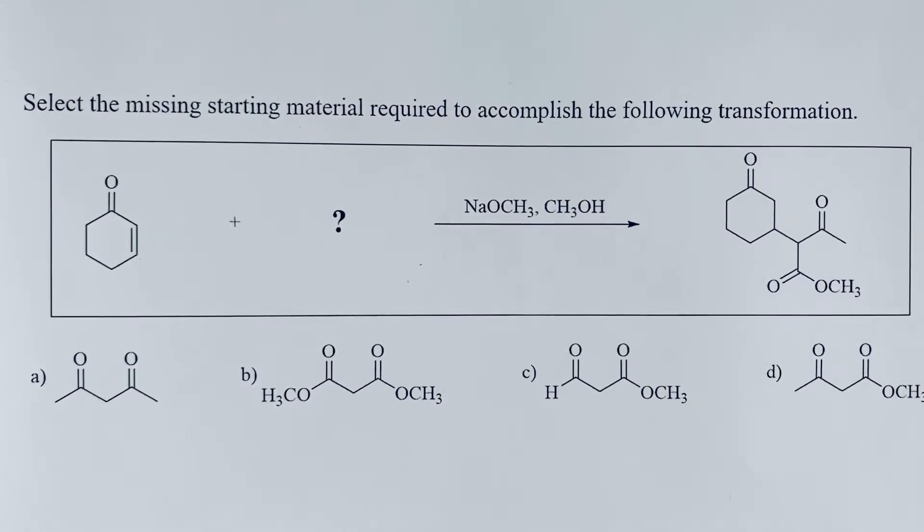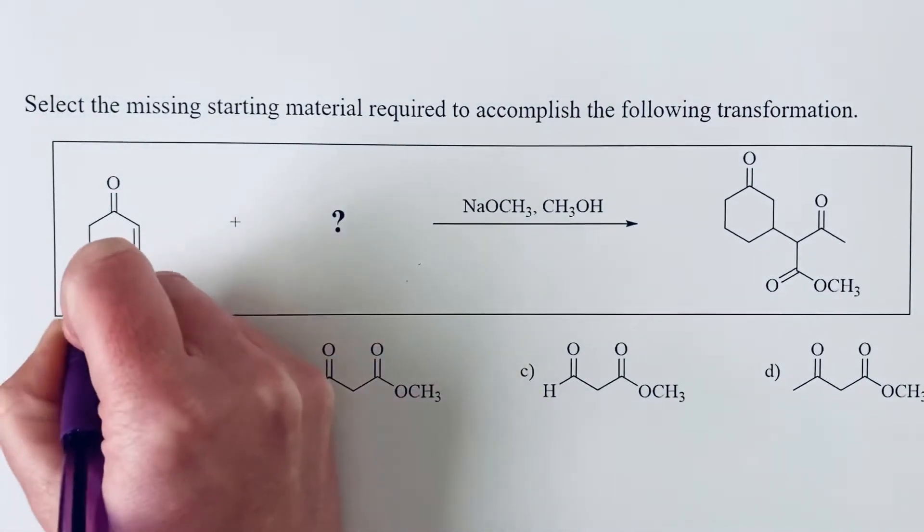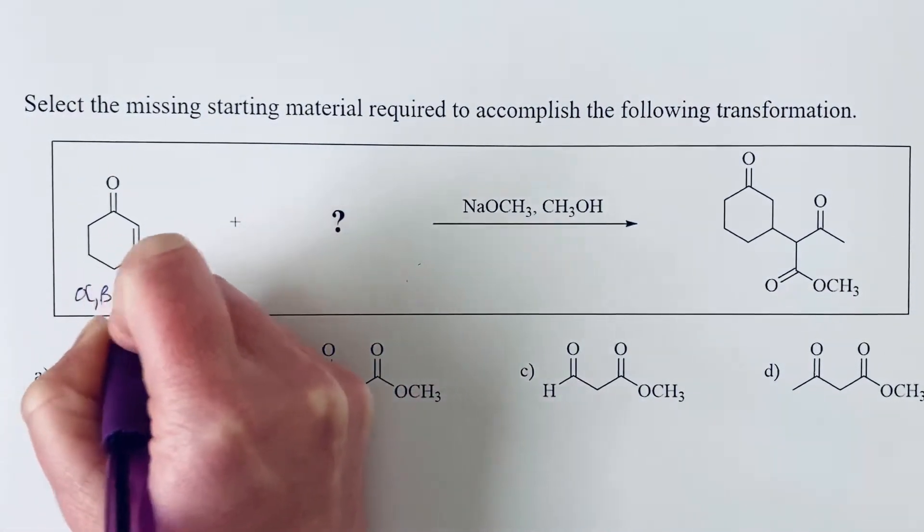Select the missing starting material required to accomplish the following transformation. If we look at the starting material that we are given, we see that we have an alpha-beta unsaturated ketone.